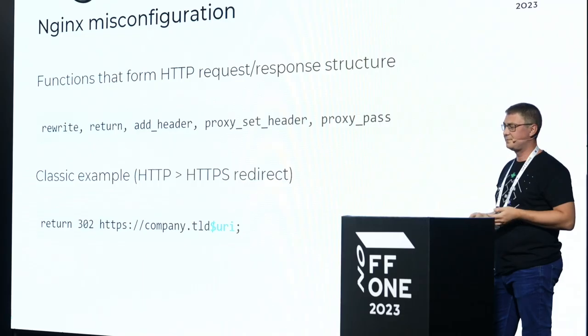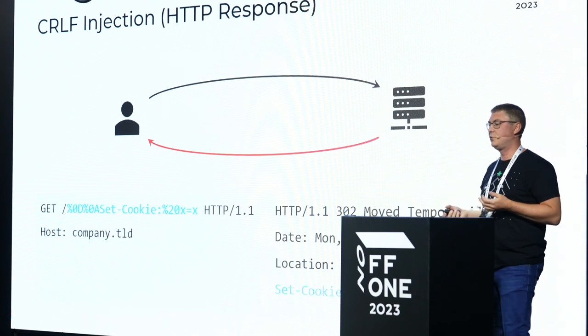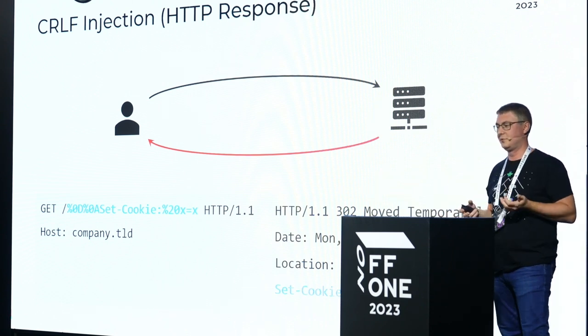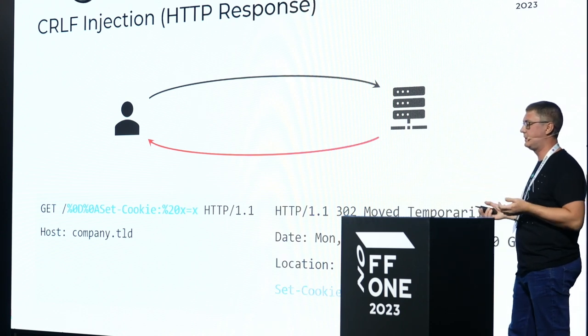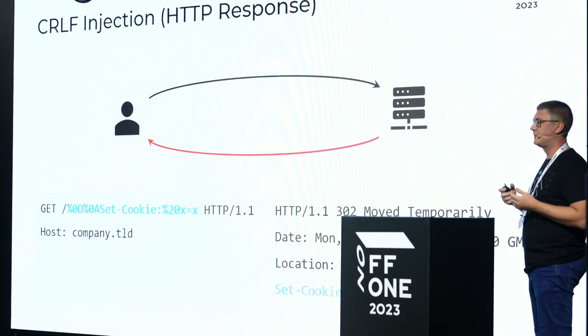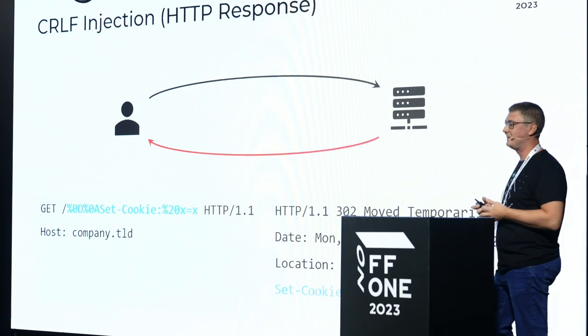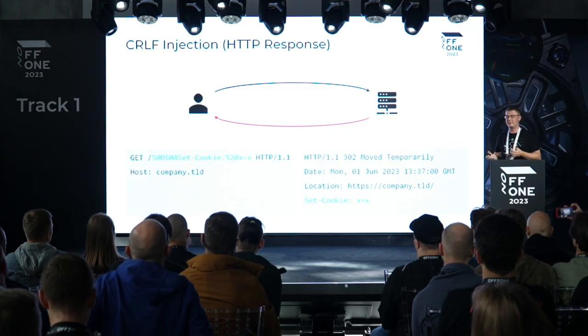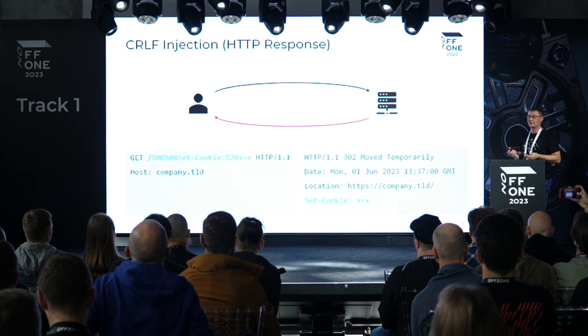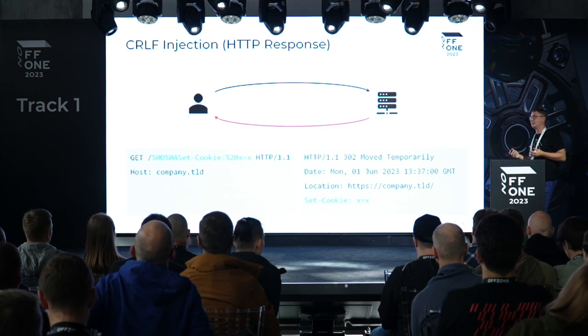If those decoded values are used in functions that generate the HTTP request or response, that will result in HTTP splitting. The classical example is the HTTP-to-HTTPS redirect — sending the user from HTTP to the HTTPS page — where we use the URI variable in the return function to keep the user on the correct webpage. An attacker can use CRLF characters to add another header and simplify exploitation of another vulnerability.